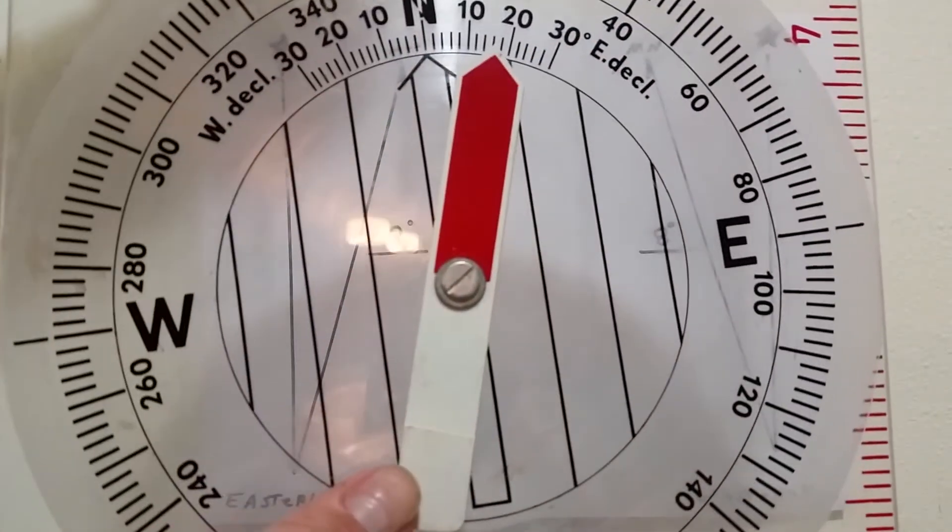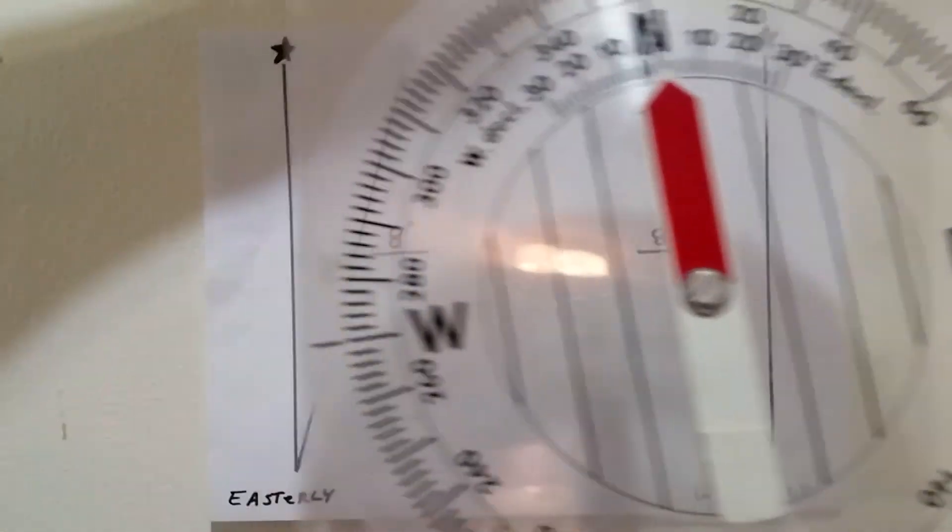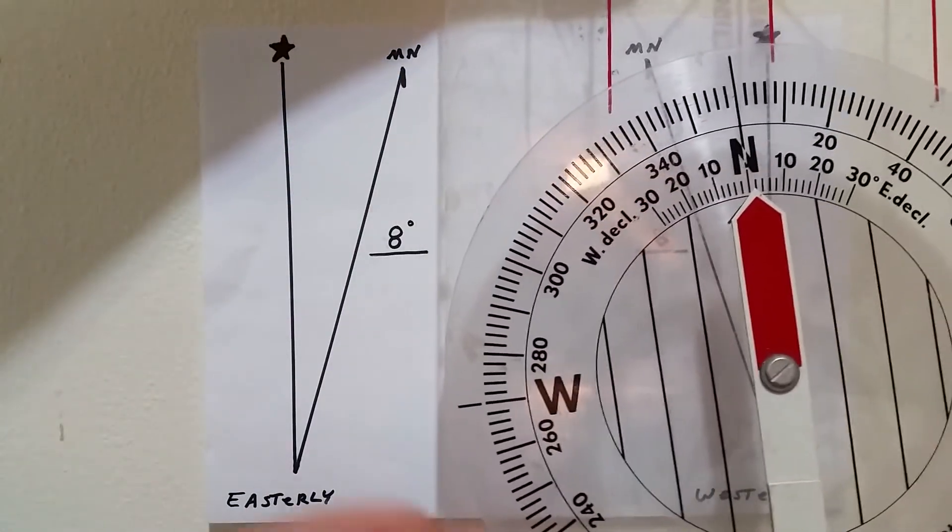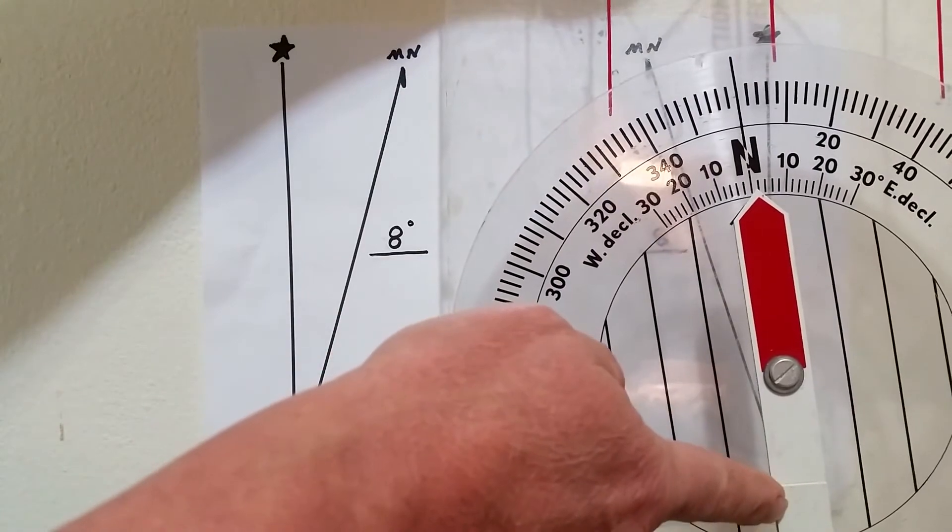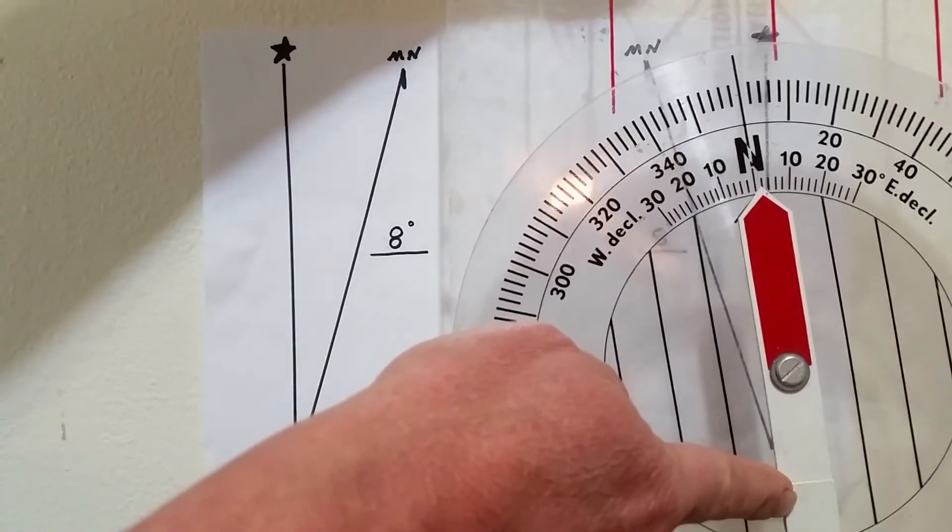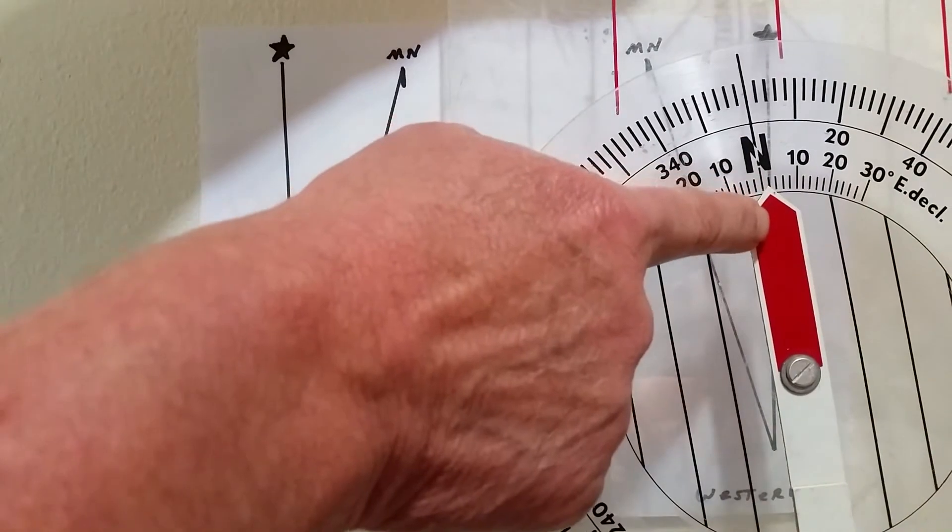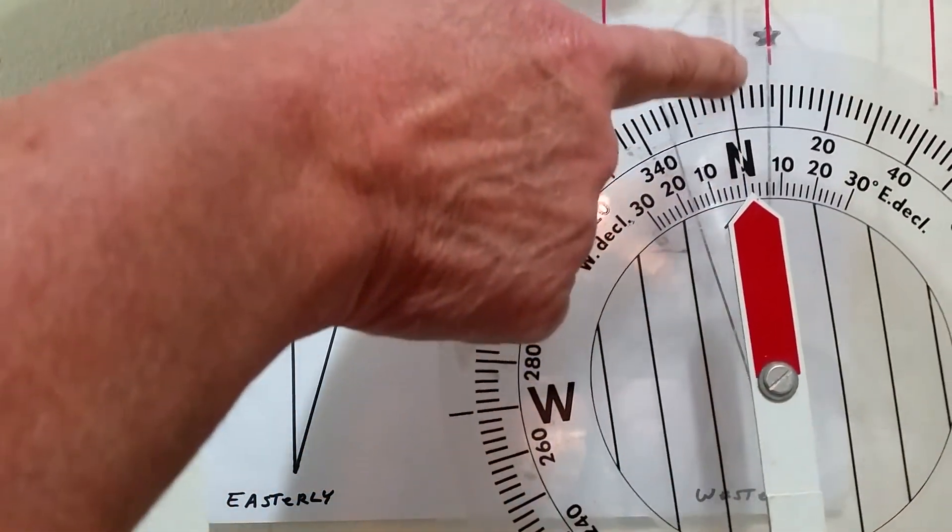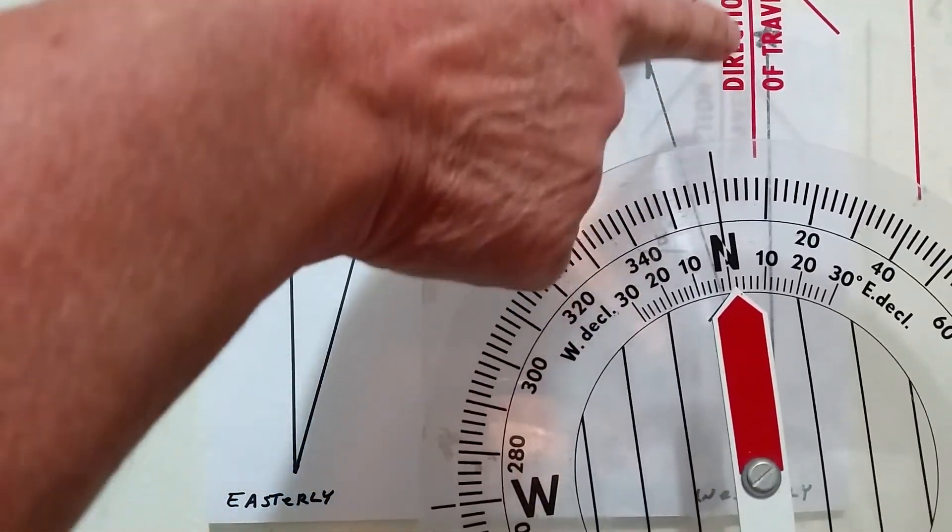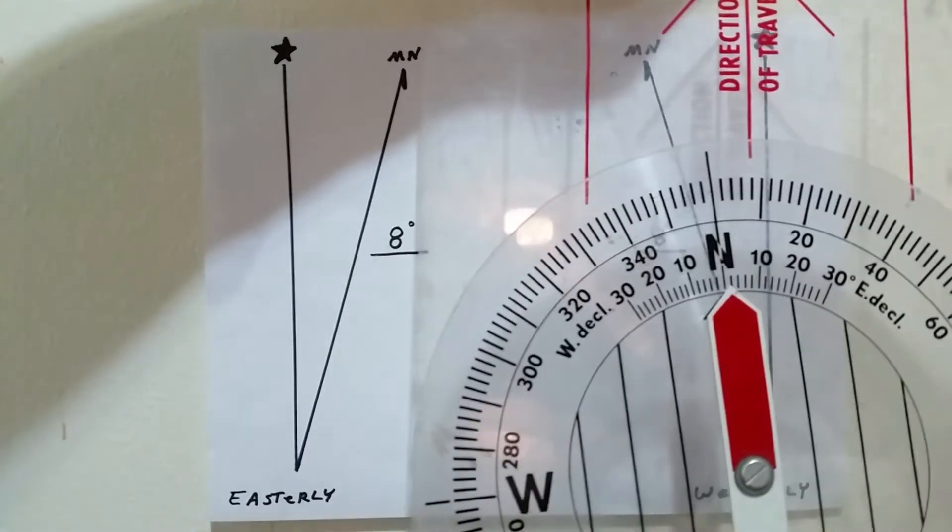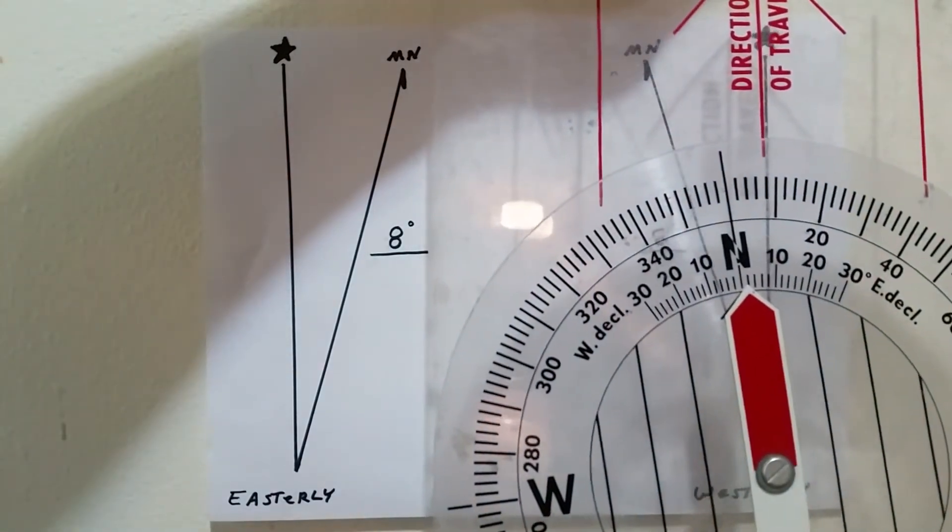And of course, this is going to move, always pointing toward magnetic north once again. So as long as I keep that on magnetic north and I walk direction of travel, now I'm walking true north. I'll get to my destination.